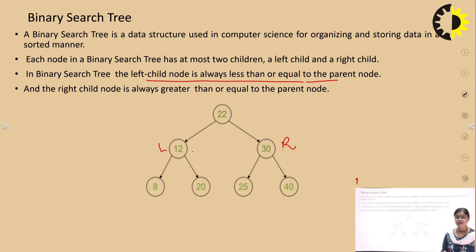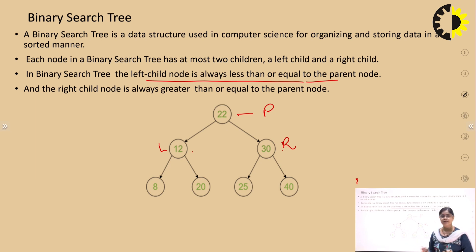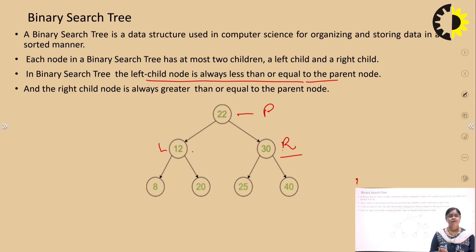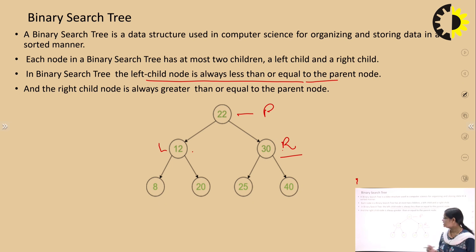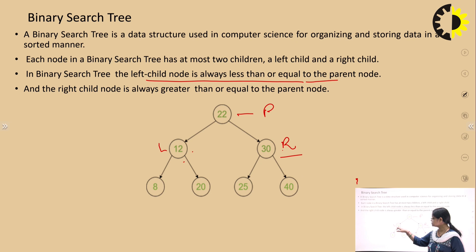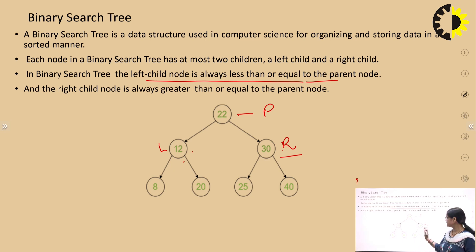For example, the root is 22 — that is the parent. Its left child is 12, which is less than the parent node, and the right child is 30, which is greater than the parent node. We have to keep in mind when doing operations or traversal in the binary search tree that if the child is less than the root, it goes to the left; if it is greater, it goes to the right side.